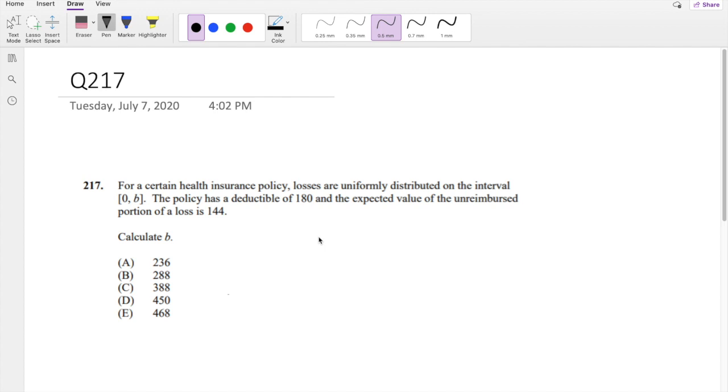For a certain health insurance policy, the losses are uniformly distributed on interval 0 to B. And the policy has a deductible of 180.